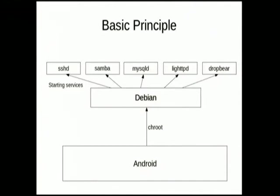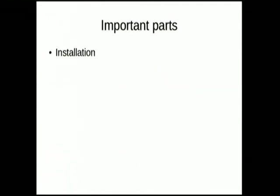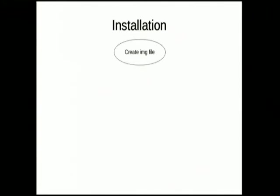You cannot distinguish between services started by Android or Debian from the outside world. The important parts are: installing Debian, starting Debian, and stopping Debian. For installation, we create an image file, then create Linux and Android mount points so Debian can access /data and the SD card, then debootstrap Debian rootfs from Debian servers.